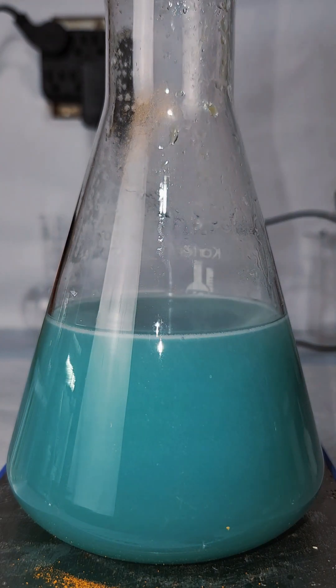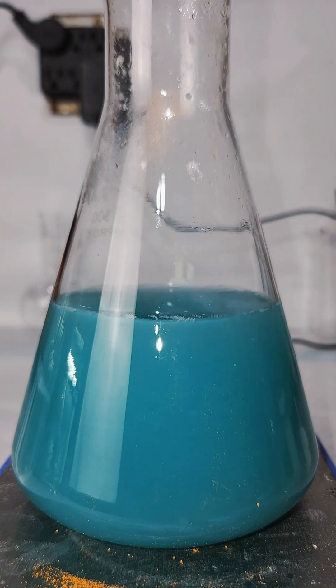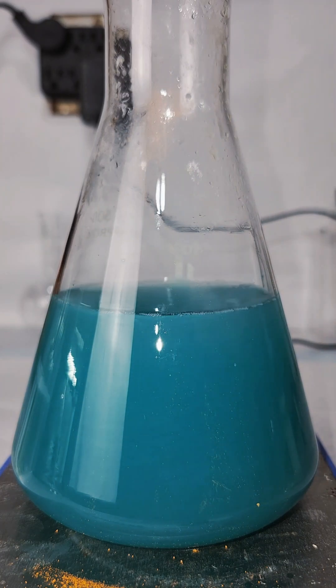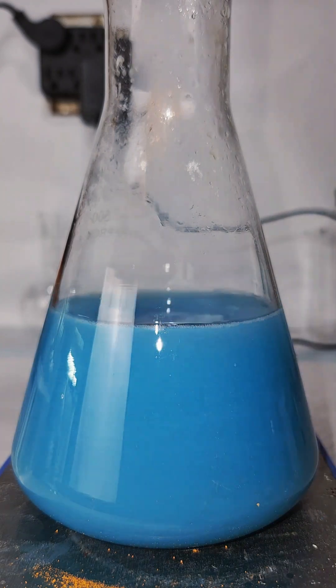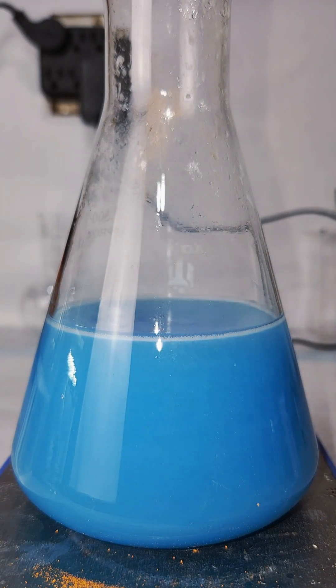Now the interesting part of this is that transition metal ions will typically have different colors depending on their oxidation state. And while the plus five state of vanadium is yellow, the plus four state is blue.